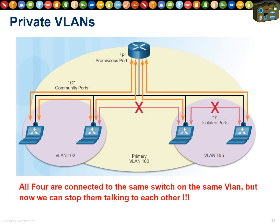Private VLANs are worth knowing about. Imagine one switch with four PCs and internet access, all on VLAN 100 — yet two PCs are unable to talk to each other while still reaching the internet. Think of a hotel with 20 rooms on the same VLAN, but configured so none of those ports can communicate with each other. Someone in room four can't attack someone in room eight — they can only reach the default gateway.